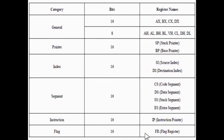Flag register determines the current state of the processor. The flag register is 16 bits and flags are modified automatically by the CPU after mathematical operations. This allows determining the type of the result and conditions to transfer control to other parts of the program. Generally, you cannot access these registers directly. There are two types of flags: status flags and control flags.